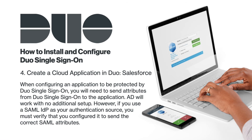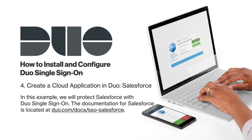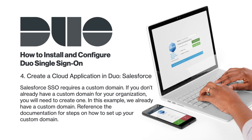When configuring an application to be protected with Duo Single Sign-On, you will need to send attributes from Duo Single Sign-On to the application. Active Directory will work with no additional setup. If you use a SAML IDP as your authentication source, you must verify that you configured it to send the correct SAML attributes. In this example, we will protect Salesforce with Duo Single Sign-On. The documentation for Salesforce is located at duo.com/docs/sso-salesforce. Salesforce SSO requires a custom domain. If you do not already have a domain for your organization, you will need to create one. In this example, we already have a custom domain. Reference the documentation for the steps to set up your custom domain.